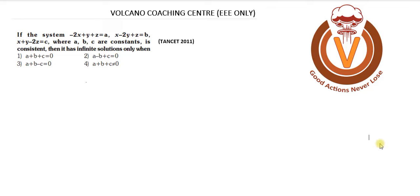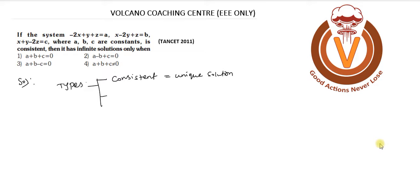In this system of linear equations, there are 3 types. First type: if the system is consistent and has a unique solution. Second type: if the system is consistent and has an infinite number of solutions. Third type: if the system is inconsistent. So there are 3 types and we have to solve it.